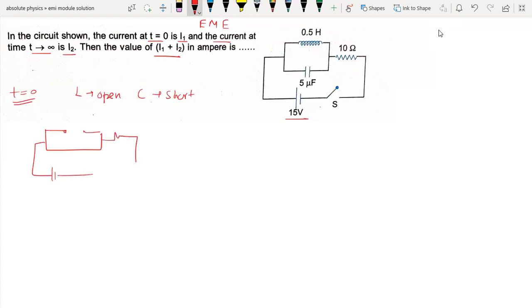In this configuration with 15 volts and 10 ohms, the current passes through. I1 equals 15 divided by 10, which is 1.5 amperes.